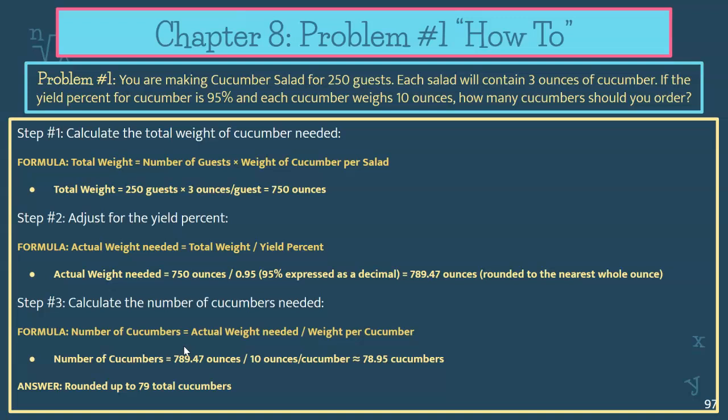So the situation is: you are making cucumber salad for 250 guests and each salad will contain three ounces of cucumber. The yield percent for the cucumber is 95% and each cucumber weighs 10 ounces. How many cucumbers should you order? A couple of things to think about here — you're making 250 salads because you have 250 guests, each salad is three ounces per guest, and you need to account for yield percent as well as the weight of each cucumber to calculate the total weight needed.